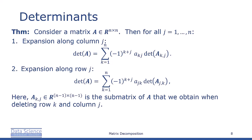Consider an n×n matrix A. For all j = 1,...,n: expanding along column j, det(A) = Σ_{k=1}^n (-1)^{k+j} a_{kj} det(A_{kj}). Expanding along row j, det(A) = Σ_{k=1}^n (-1)^{k+j} a_{jk} det(A_{jk}). Here, A_{kj} is the (n-1)×(n-1) submatrix obtained by deleting row k and column j from A.